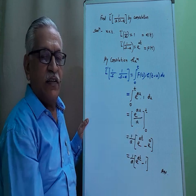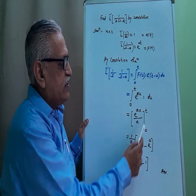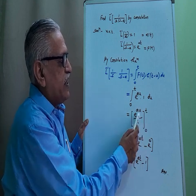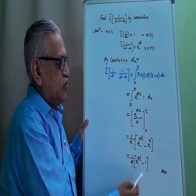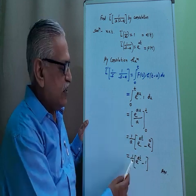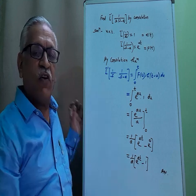This is e raised to au divided by a, limit from 0 to t. 1 by a constant we take outside. Substituting the upper and lower limits we get upper limit as e raised to at, for lower limit e raised to 0. Therefore the final answer is e raised to at minus 1, divided by a.